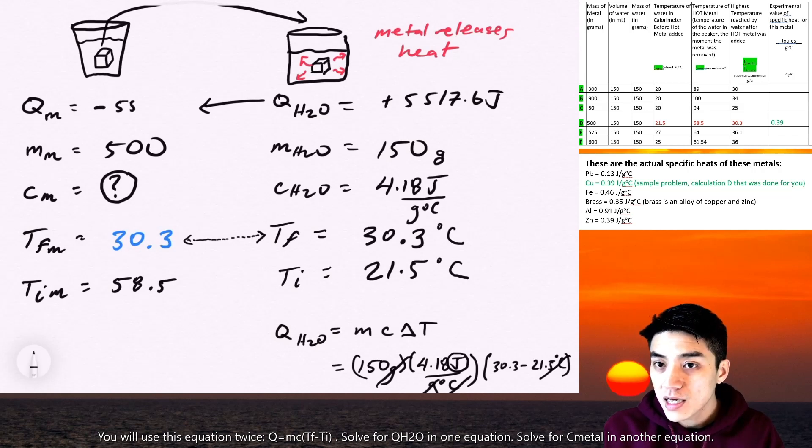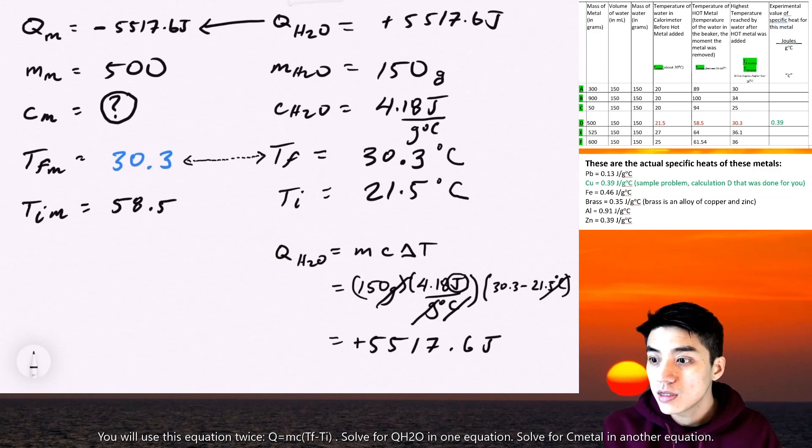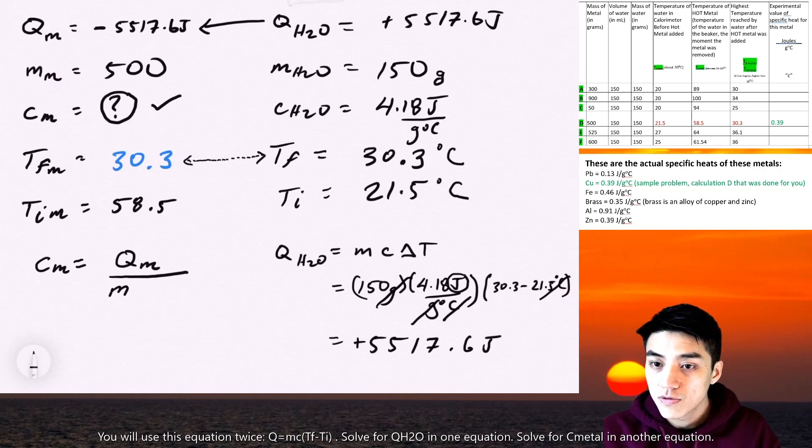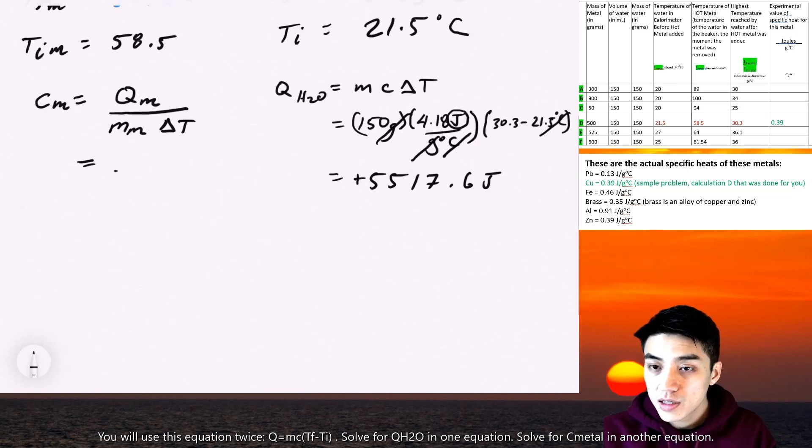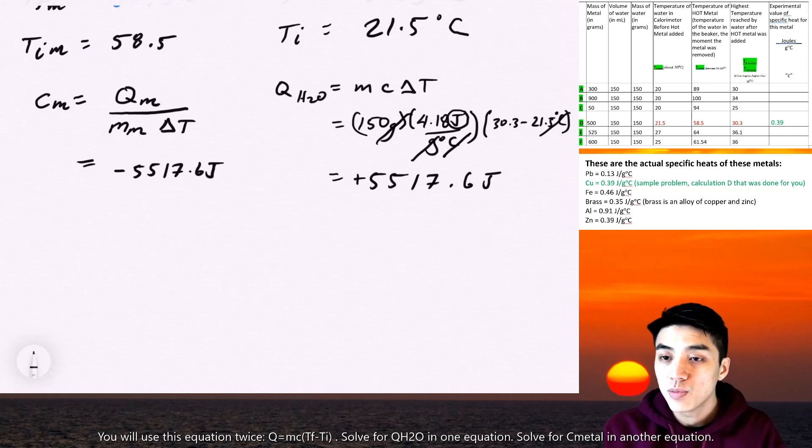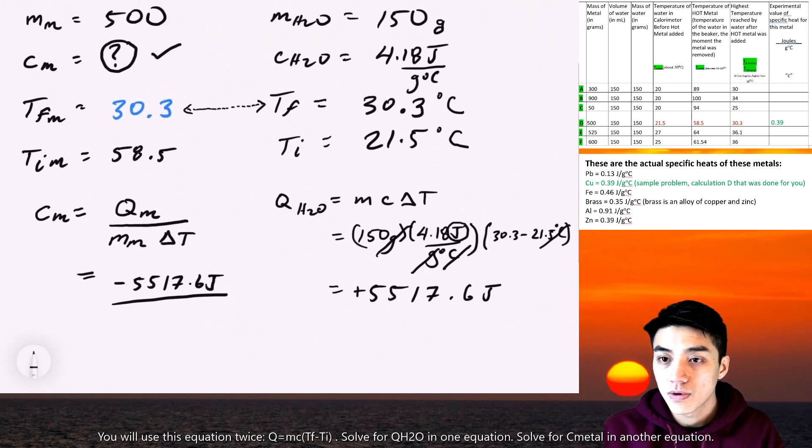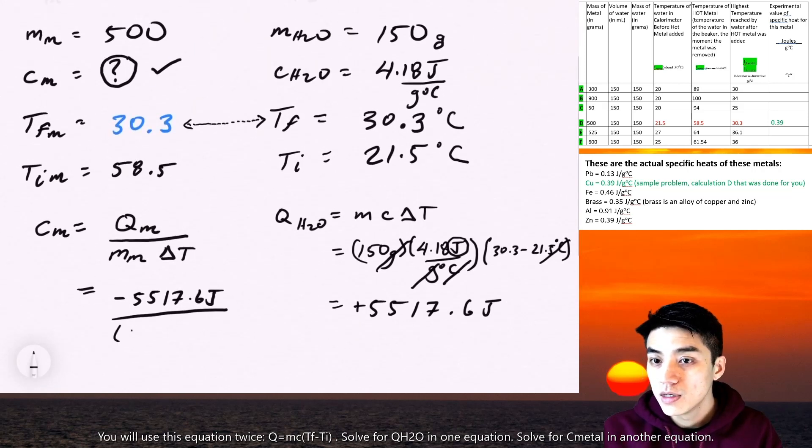And now I come back to the left hand side of the equation. It's the same number but with a negative sign because that's the heat that's released by the metal. And I have enough information now to solve for C of the metal, which is the specific heat. So I rearrange my equation and I plug in Q over M delta T. So I just plug in all the numbers that I had before. Negative 5,517.6 joules for the heat released by the metal.